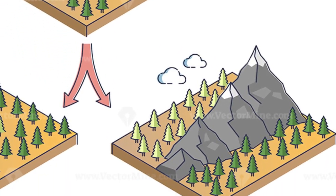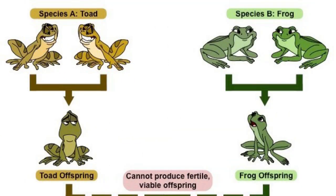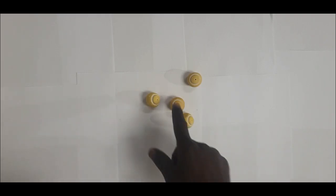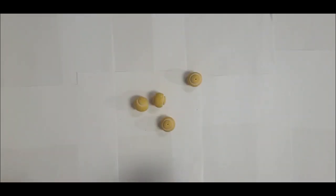Everything we have is going to look like the natural environment. Before the species form, remember, when we talk about species, these organisms must be able to interbreed and produce a fertile offspring. So I have one species — I'm going to call them organism A. These species must be able to interbreed because they are of the same kind, so we're going to call it a population.